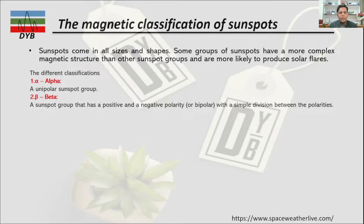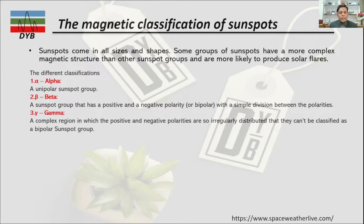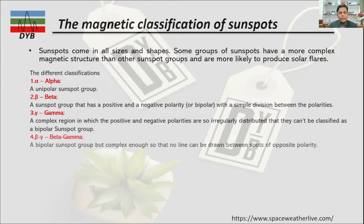The second group is called Beta — a sunspot group that has positive and negative polarity, a bipolar group with a simple division between the polarities. The third classification is Gamma: a complex region in which the positive and negative polarities are so irregularly distributed that they cannot be classified as a bipolar sunspot group.